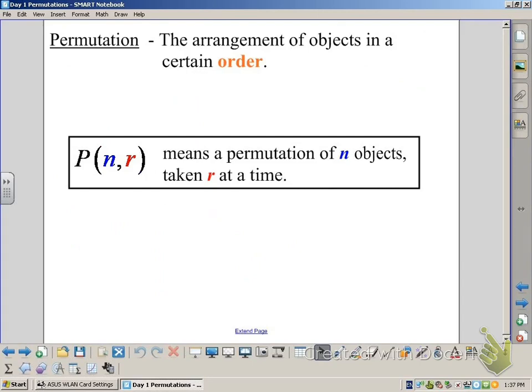This is called a permutation. The symbol for permutation is P(n,r), meaning a permutation of n objects taking r at a time. This is for things that are arranged in a certain order.